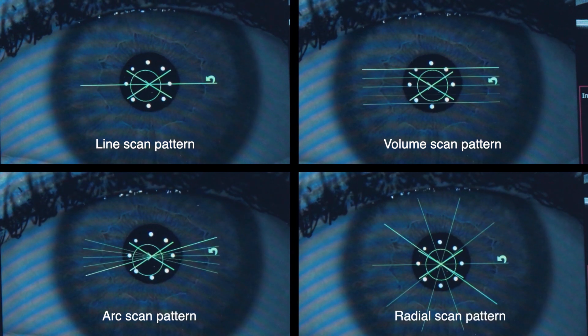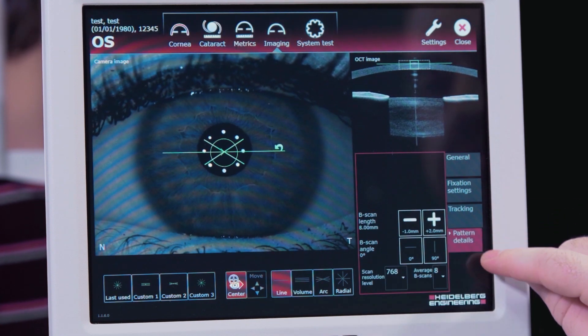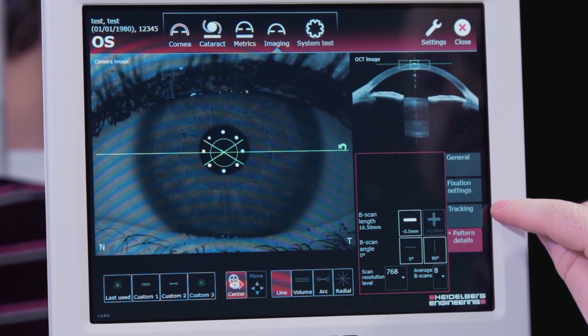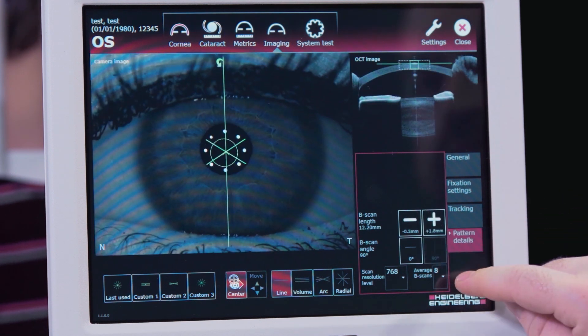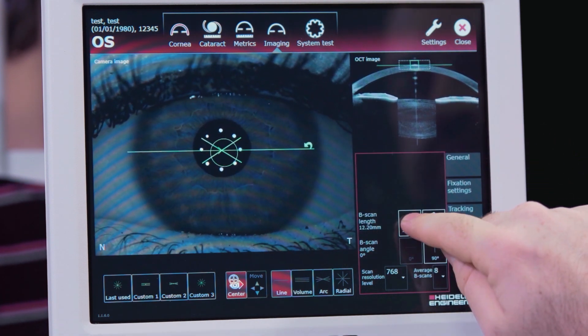We can adjust all the scan patterns on the imaging app with the pattern details tab. We can change the length, the angle, or we can manually adjust the orientation by dragging the scan on the camera image window.